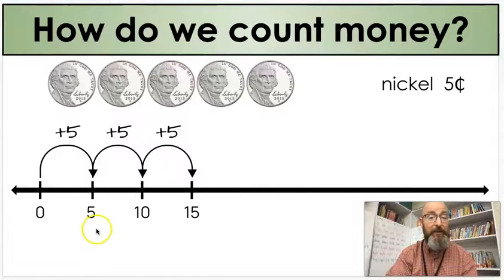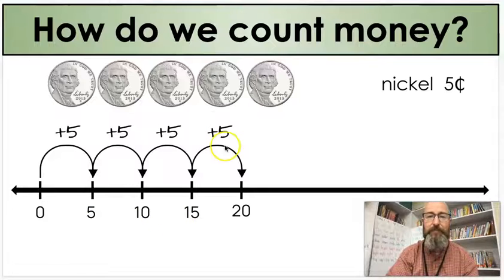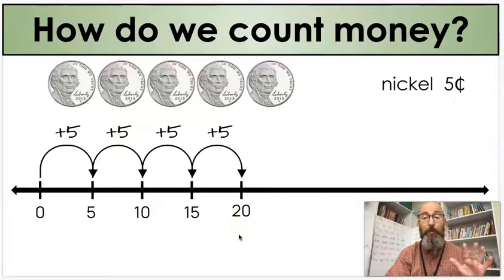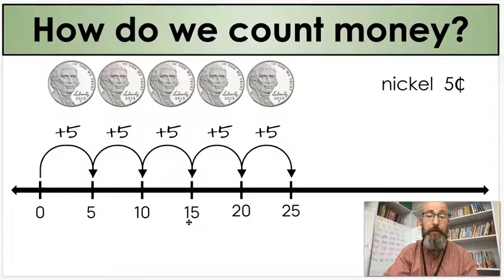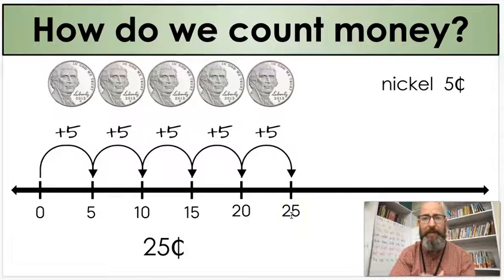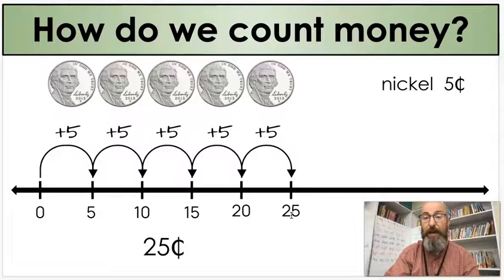Fourth nickel: I add five again, now I have twenty cents. If you're having trouble, you can always use your fingers — if you start with fifteen, you can count 16, 17, 18, 19, 20. You can use fingers or little counters if you need to. Last nickel: we add five again, and now we have twenty-five cents. Just like last time, you're probably thinking — isn't that a quarter? It is. Five nickels makes one quarter. That's one of those things you need to know for later.